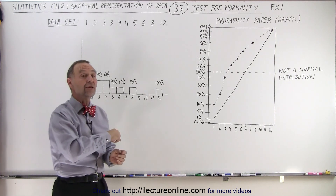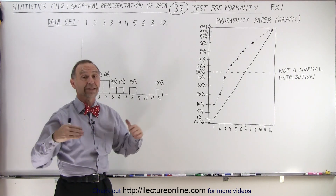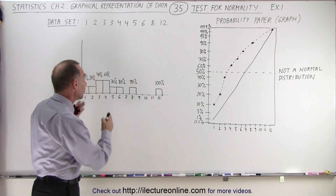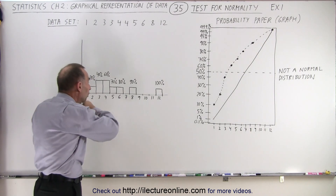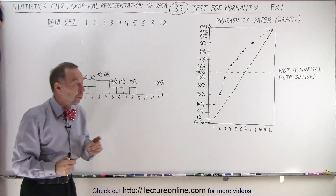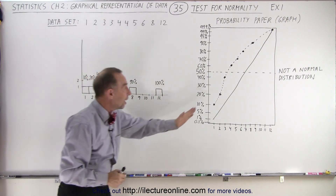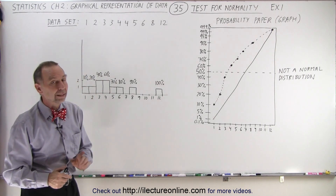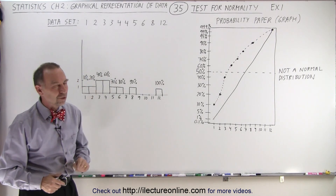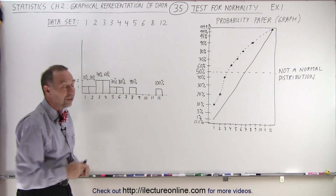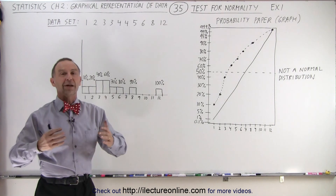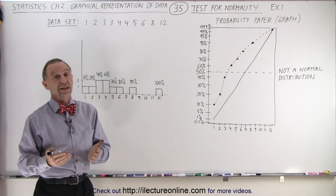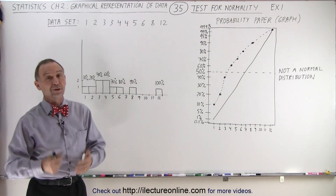On the next video, we're going to try this again with a data set that has a much closer to normal distribution, and the dots should get much, much closer to that diagonal line. Stay tuned and we'll take a look at what it looks like for a data set that has a normal distribution.